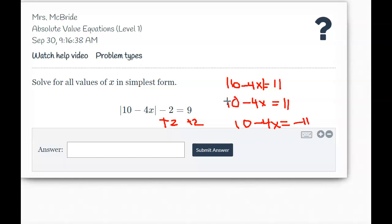And then you would subtract 10 from those sides. So you'd get negative 4x equals 1 and negative 4x equals negative 21. Then we divide both sides by 4, and I see that I get an answer of x equals negative 1 fourth and x equals a positive 21 fourths.